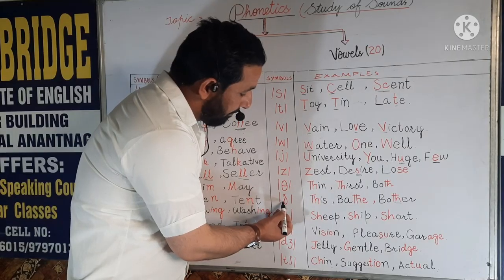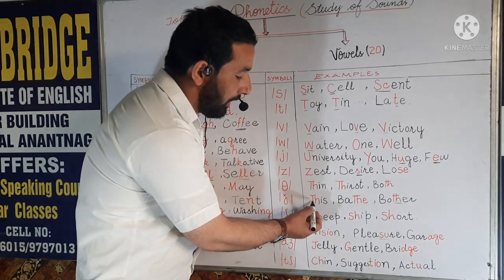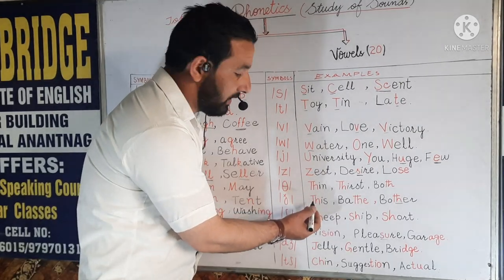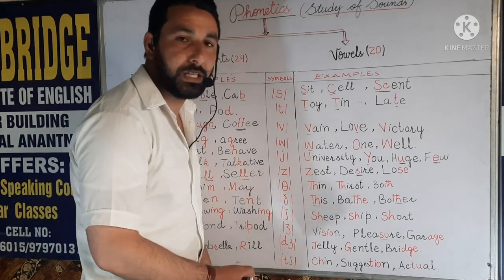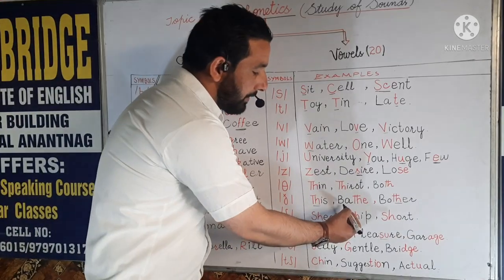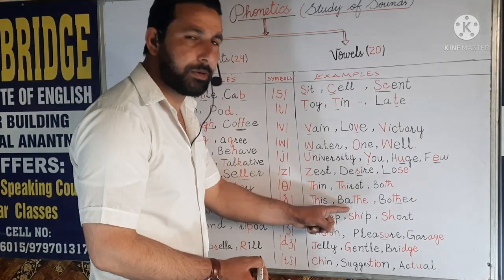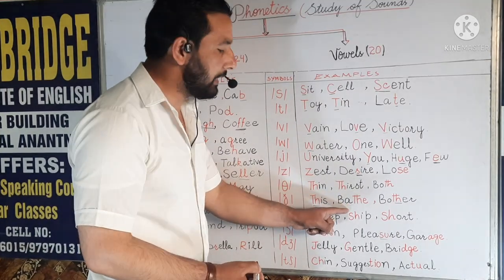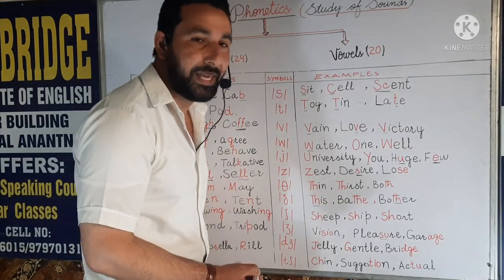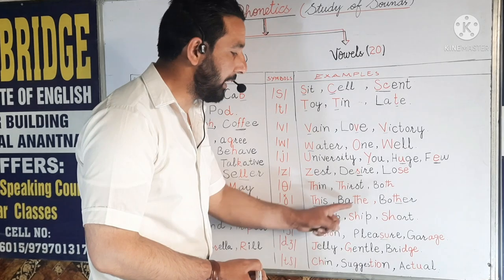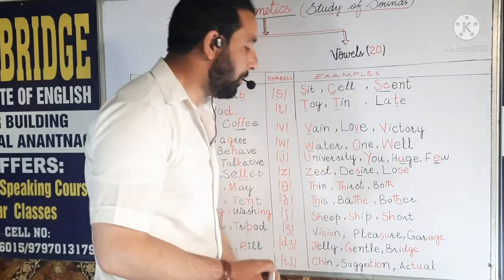Next example is the voiced TH sound, as in 'the'. For example, we have 'this' — instead of the letters TH, we have to sound the voiced TH. Next is 'bathe' — we often mispronounce it as 'bath' or something else, but it is 'bathe' with the voiced TH. And this is 'bother' — which also uses the voiced TH.